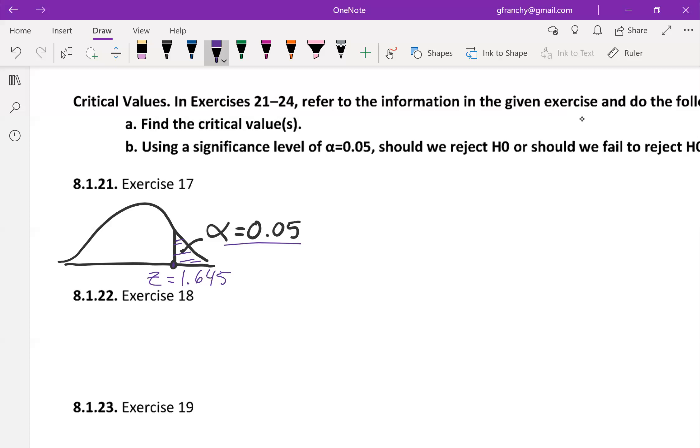So you want to be careful about that. You want to know what these things are actually telling you. So on the bottom right of table A2, the common critical values, those are for confidence intervals.